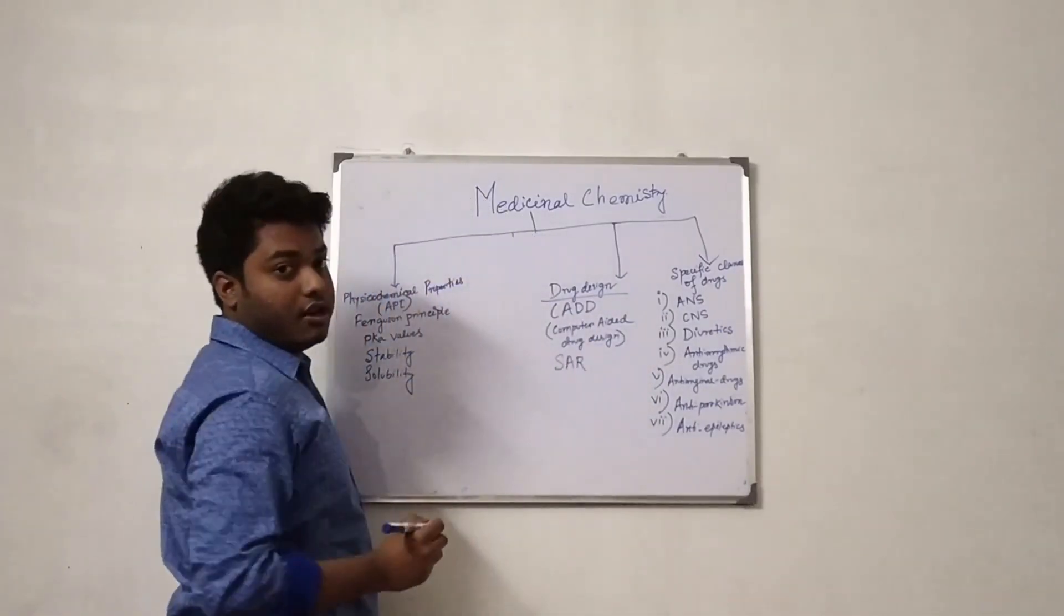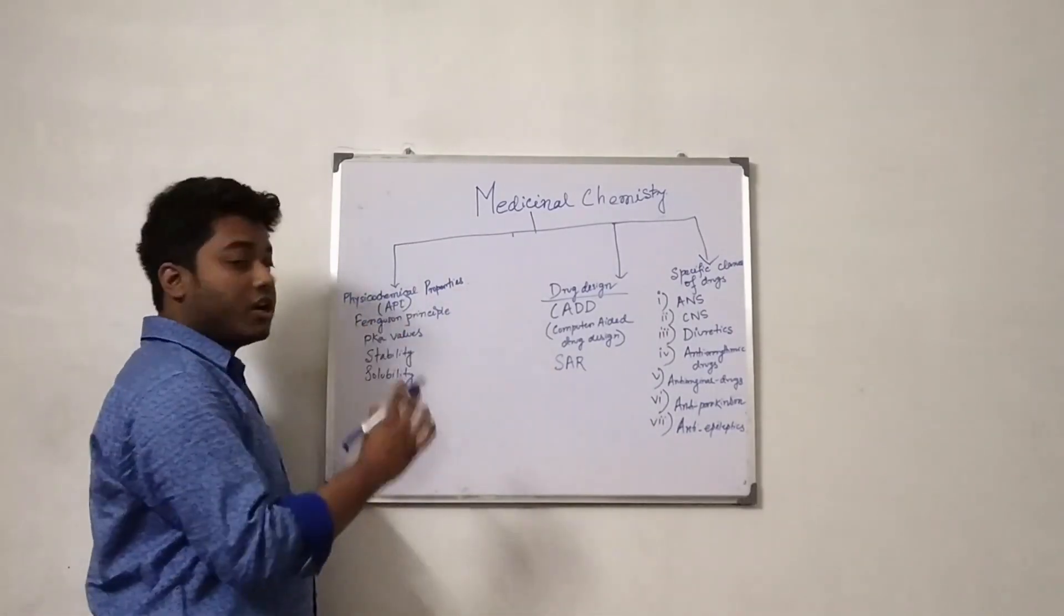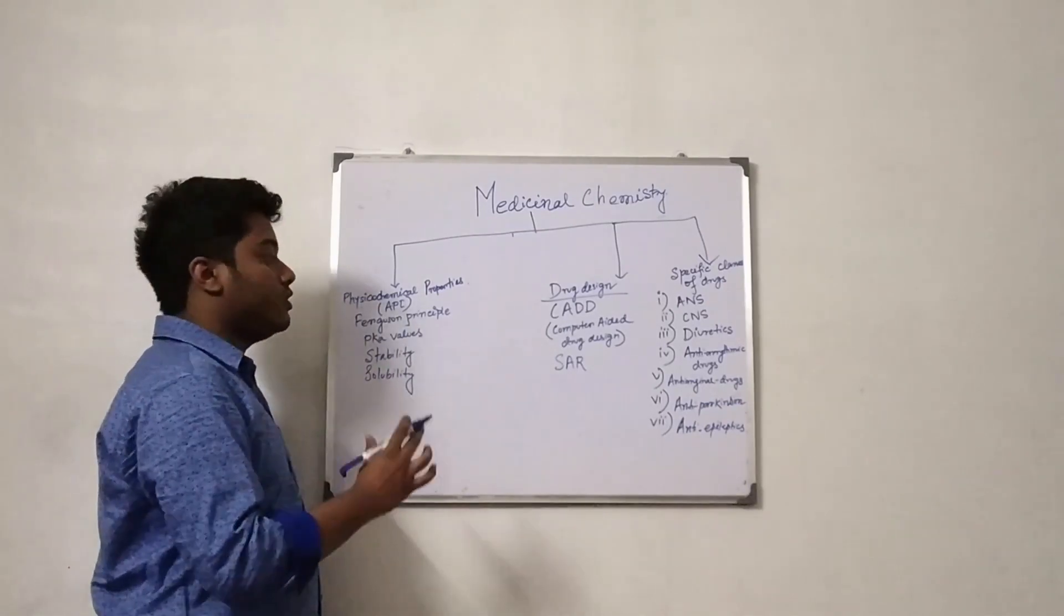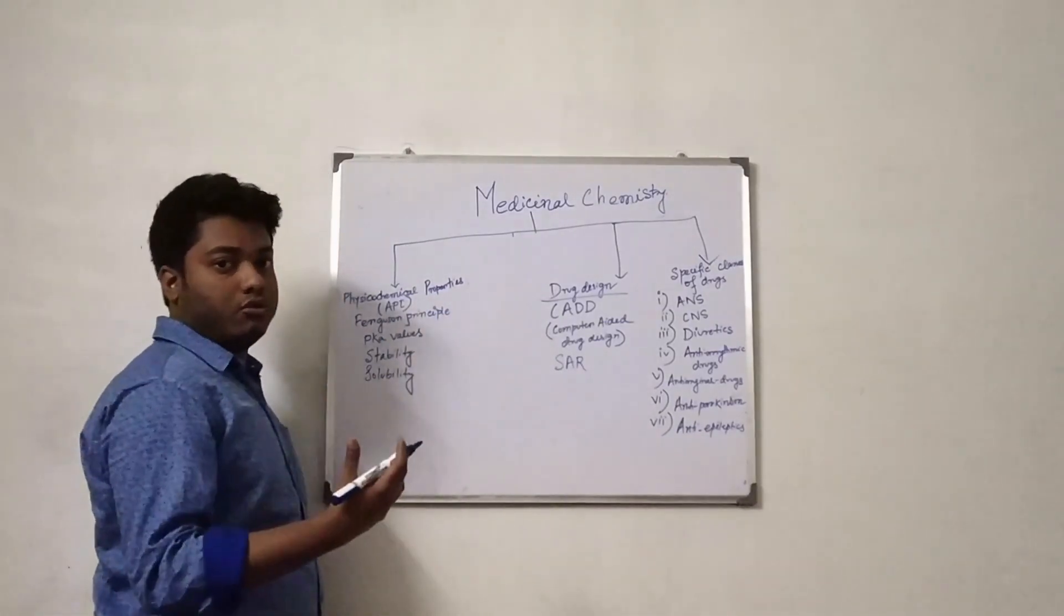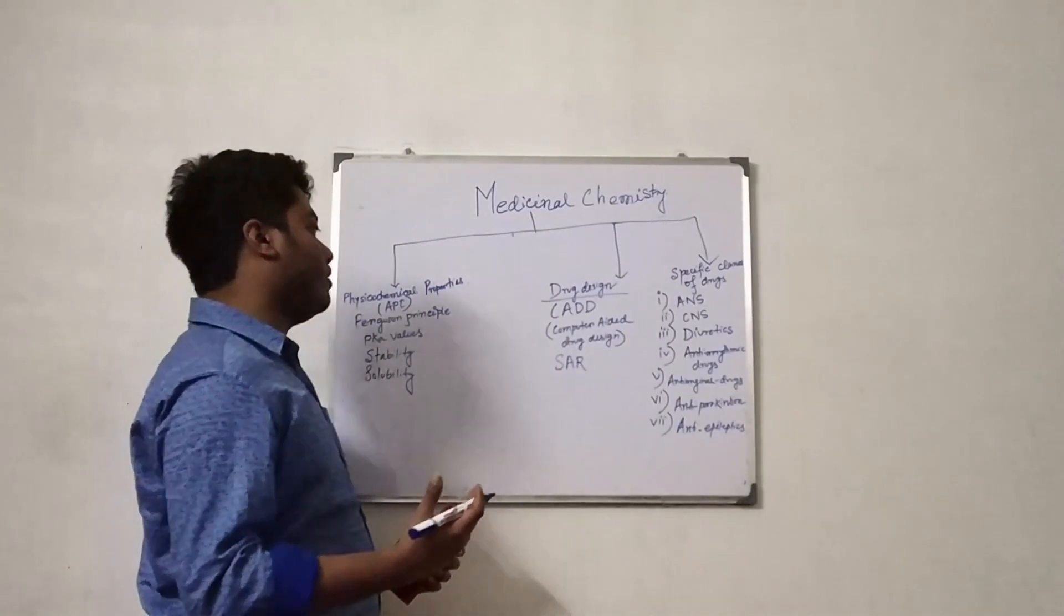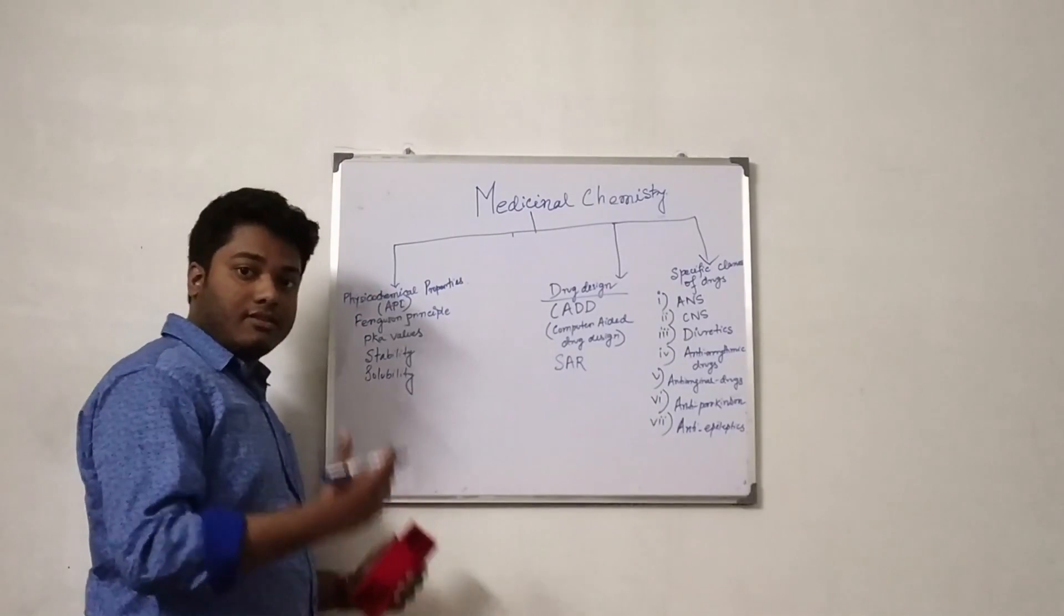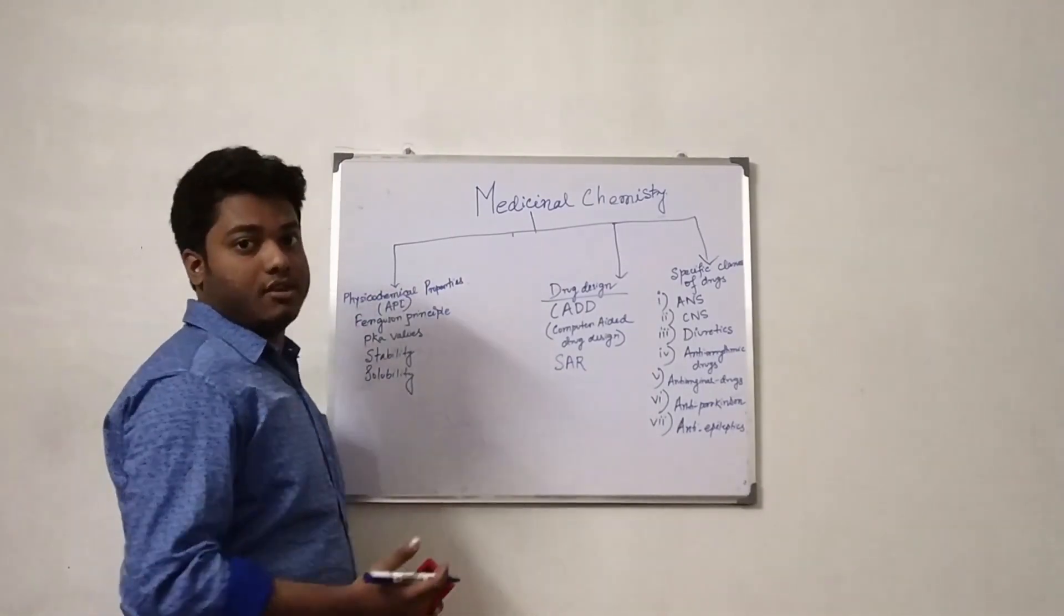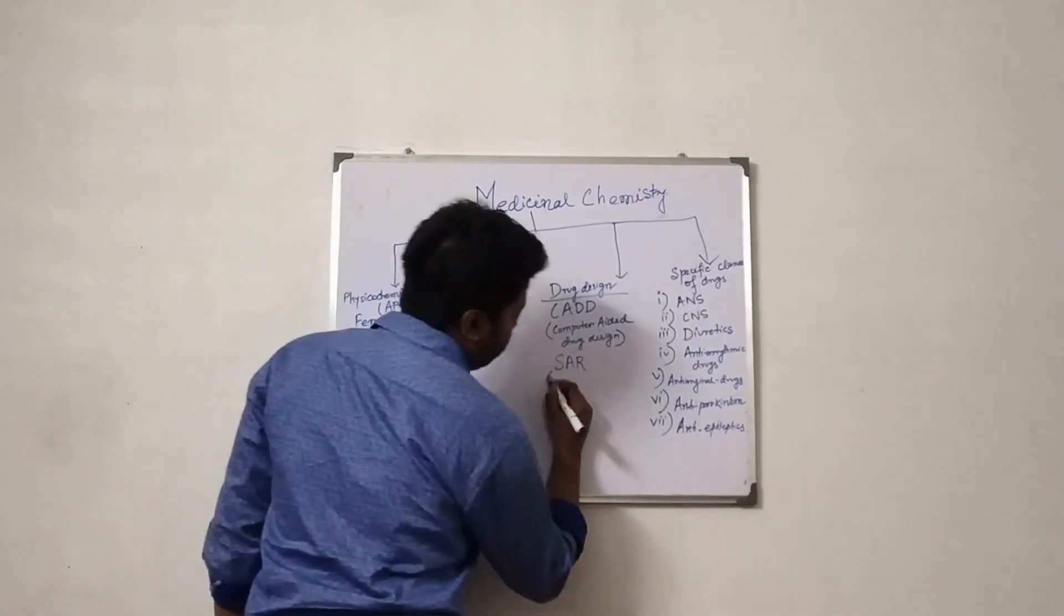Structural activity relationship is very important for each and every specific drug because the structural activity relationship will tell us what modification we have to do in our molecules to increase their activities. We have to remember that every chemical modification has been done to decrease the side effects of a particular disease and to increase the efficiency of a particular drug. So structural activity relationship is very important.